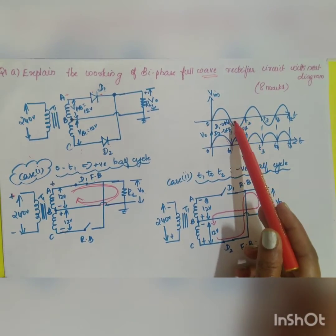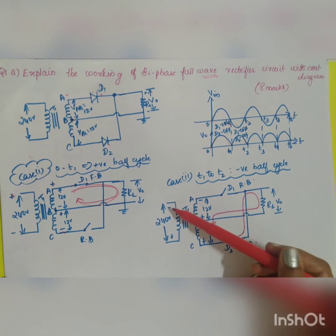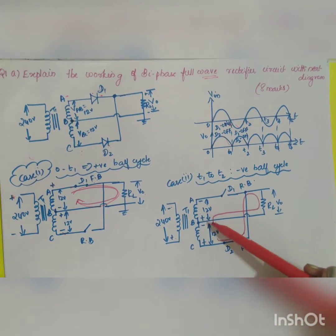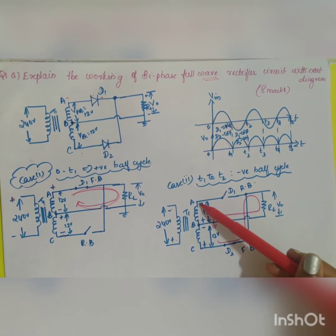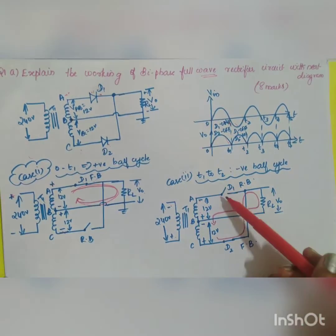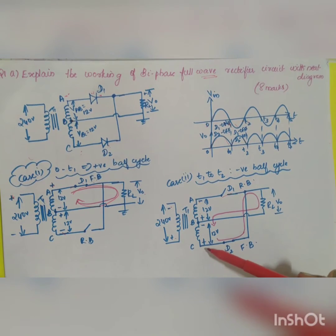From t1 to t2, during the negative half cycle, the polarity of the signal changes to negative-positive. Diode D1 becomes reverse biased (negative to positive) and acts as an open switch, but D2 will be forward biased and acts as a closed switch.